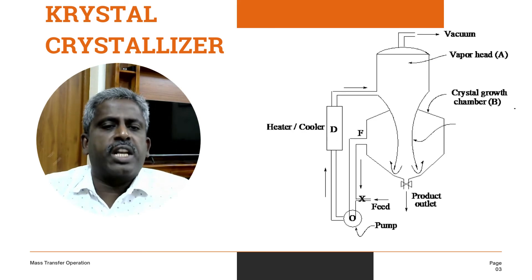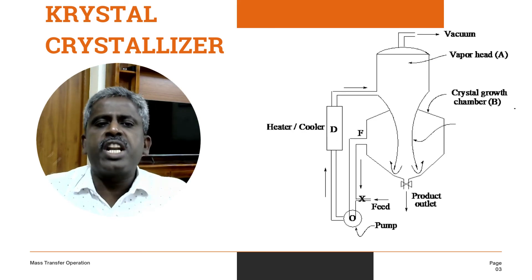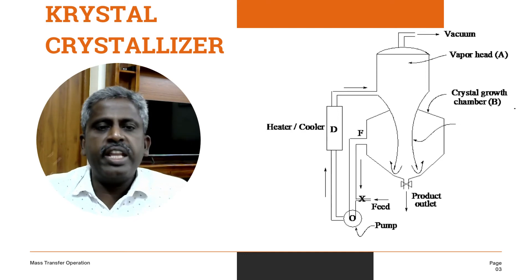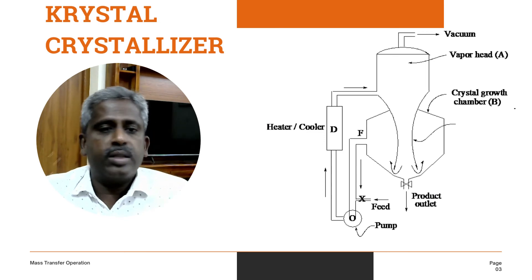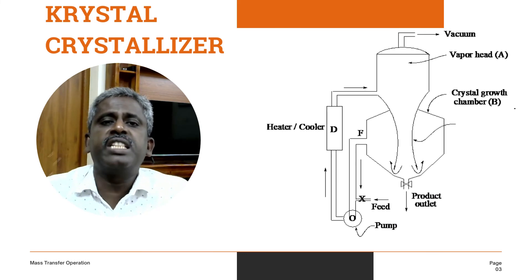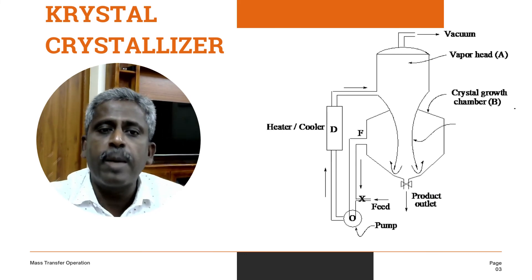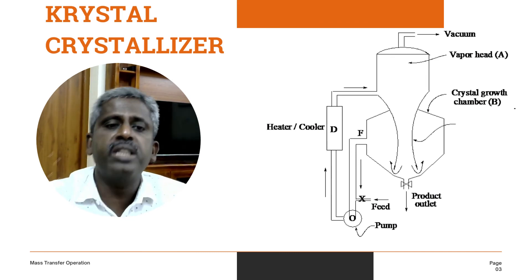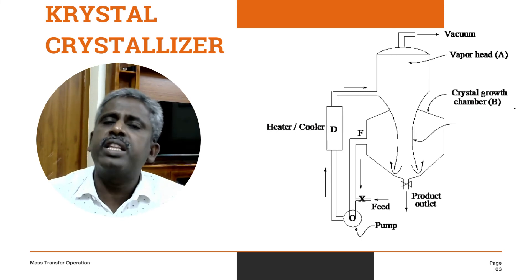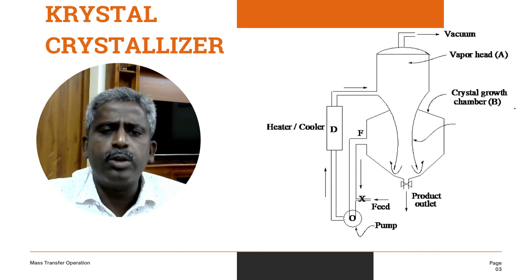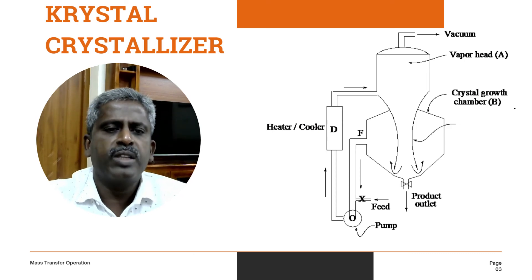The next one is the crystal crystallizer. The part indicated as A is the vapor head, and the part indicated as B is the crystallizing chamber. For the first time, solution is fed into the suction end of the pump indicated as C. The pump sends the feed solution to the heater or cooler indicated as D. The feed is then introduced into the vapor head A. The vapor is discharged to the condenser and the vacuum pump. The operation is controlled so that crystals are not formed in vessel A, but vessel A is prolonged into tube E, which extends almost to the bottom of vessel B.